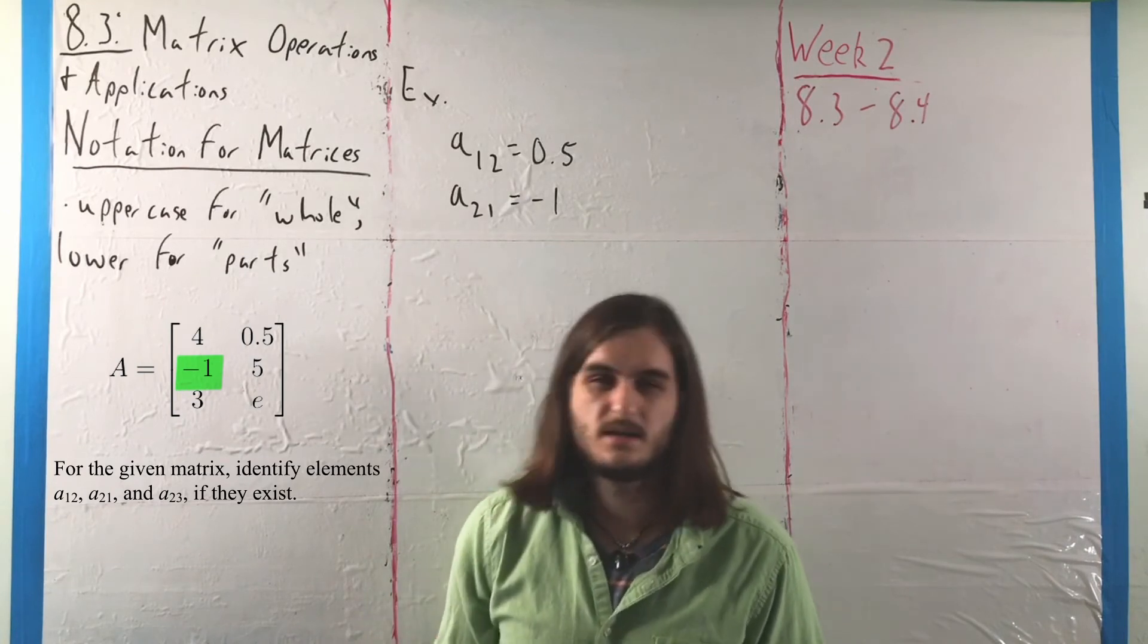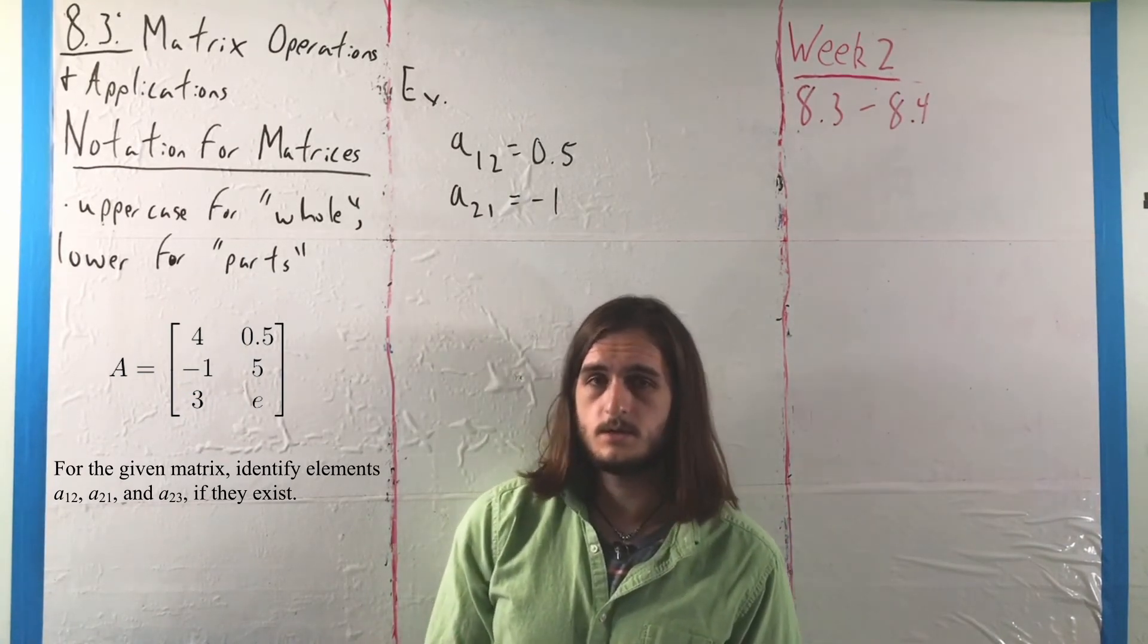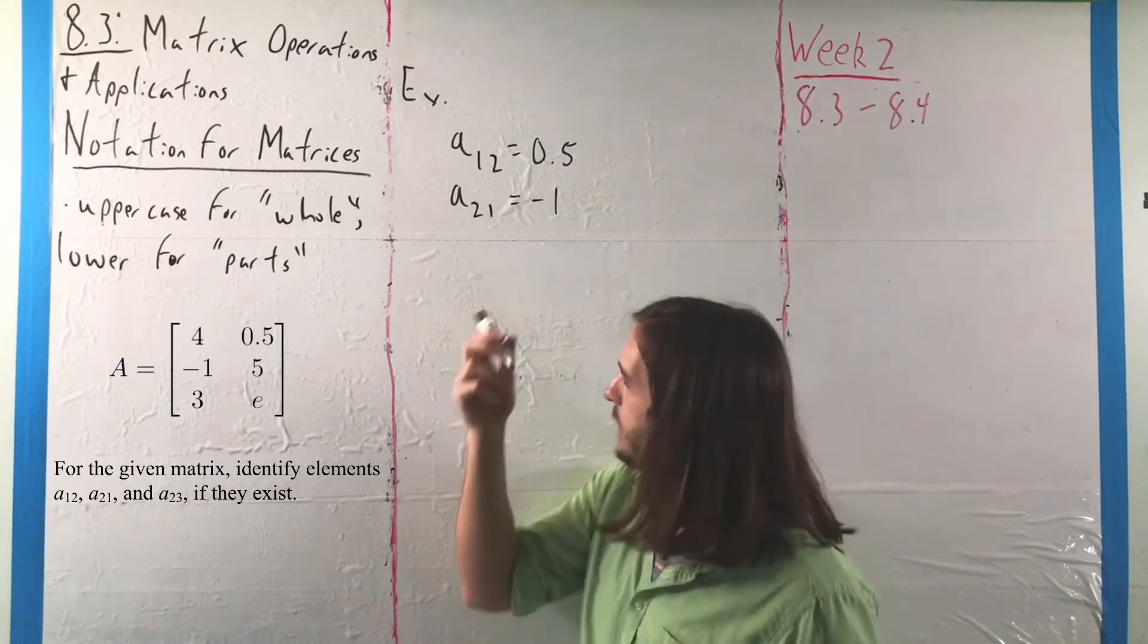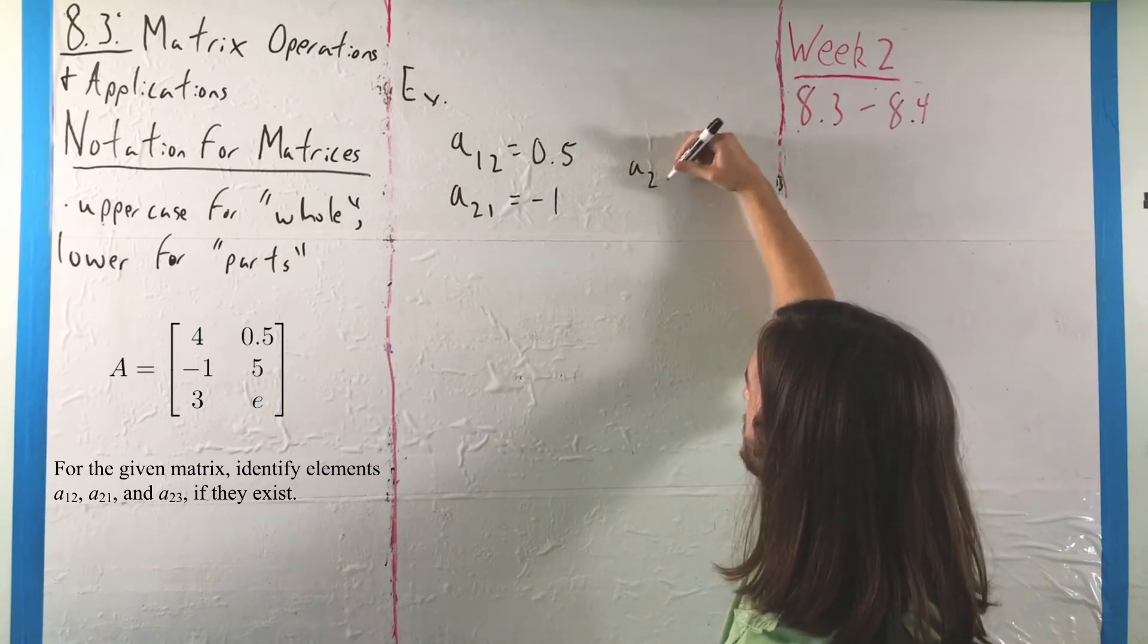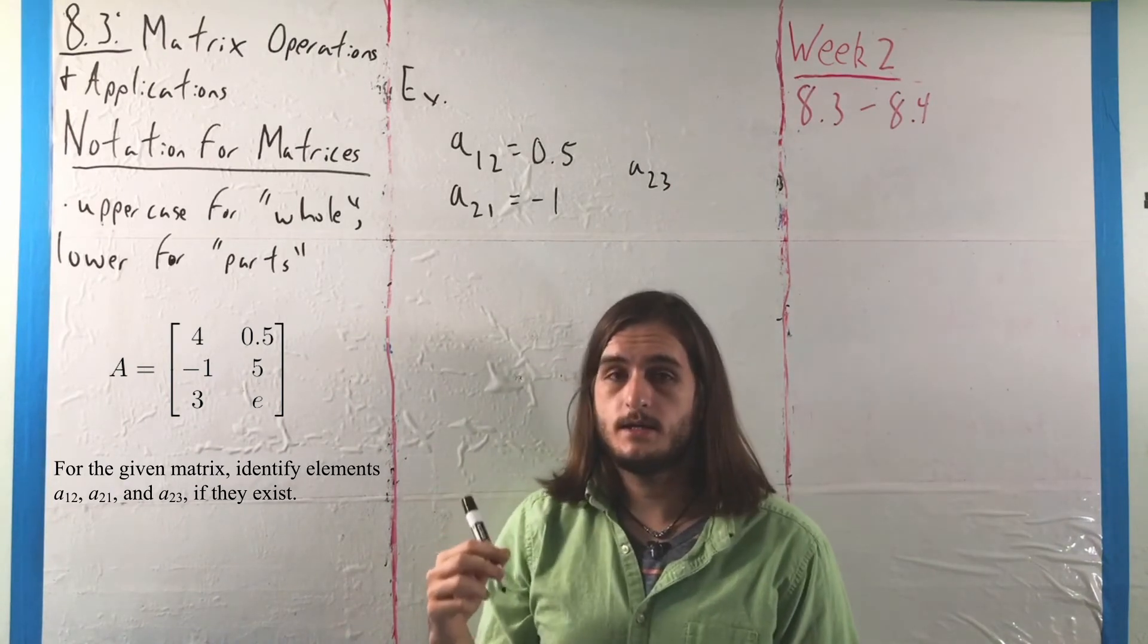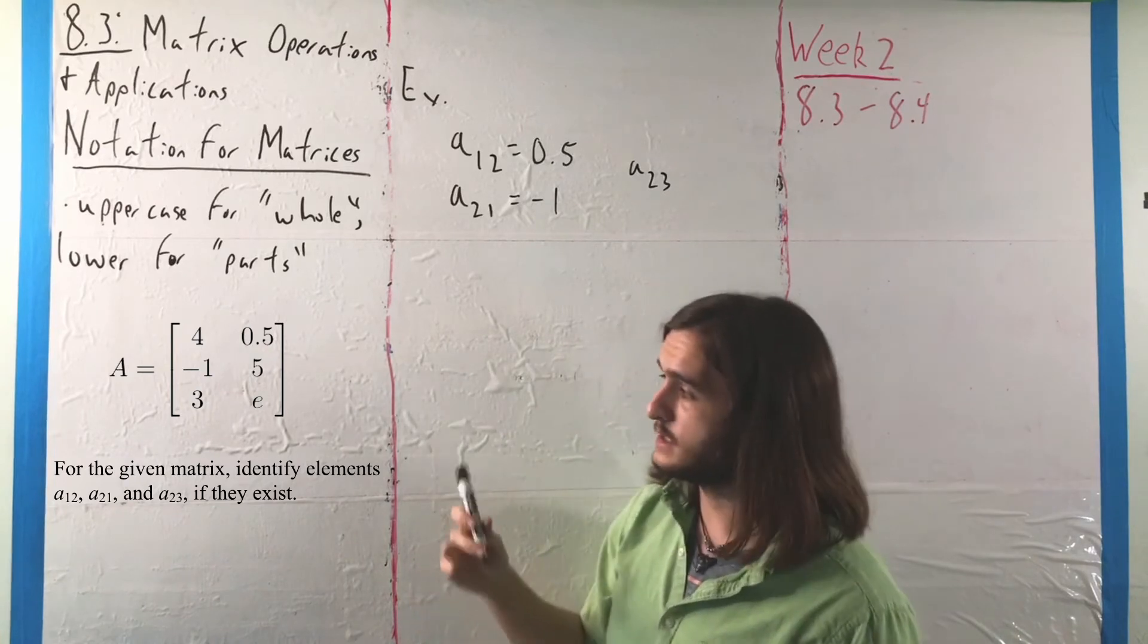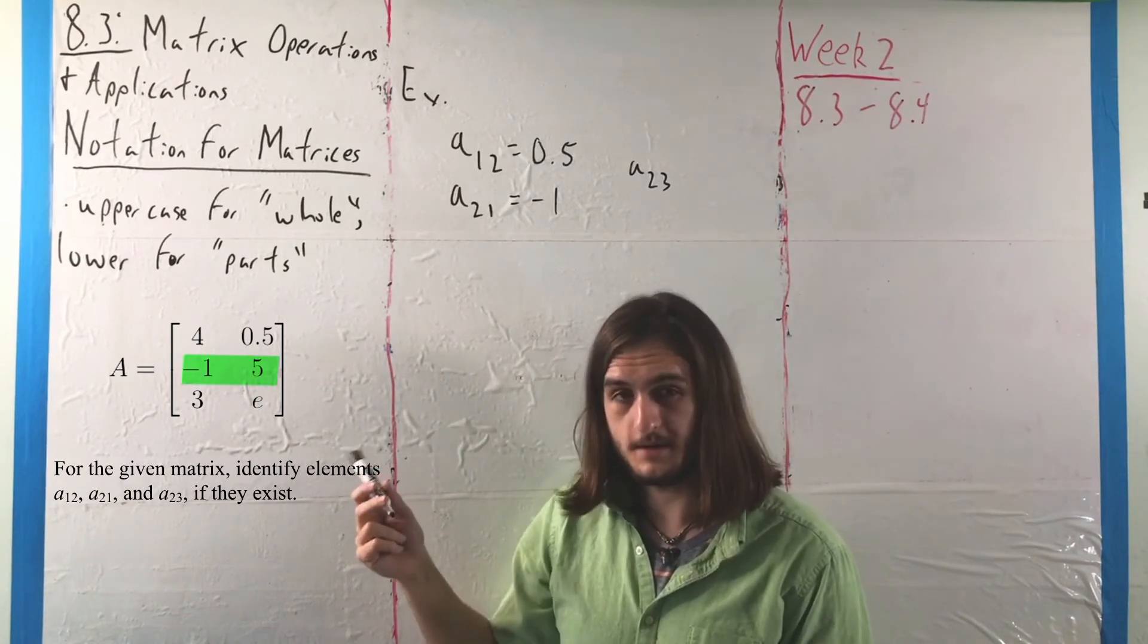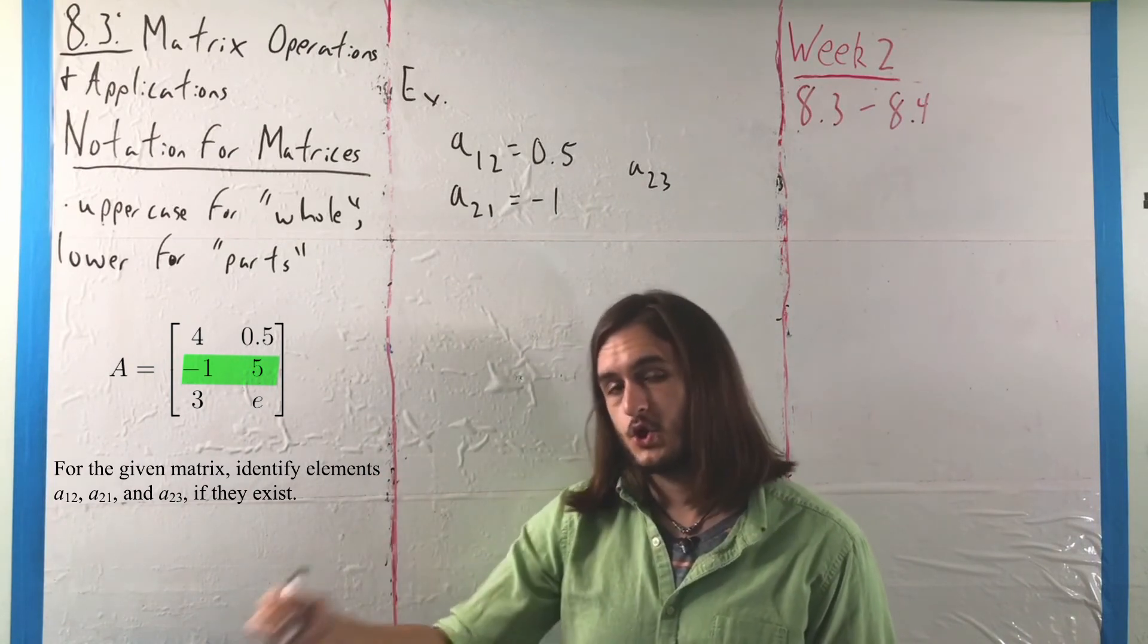Our last case is a little different. When we're looking for a23, we're trying to identify the element in the second row and the third column.